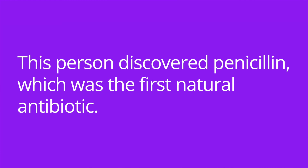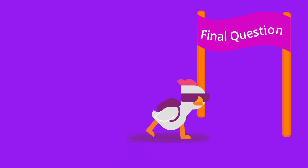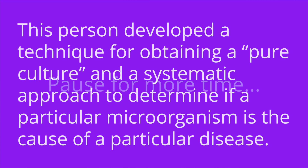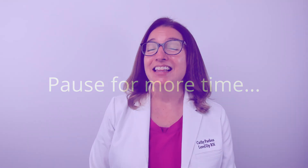Number four: this person discovered penicillin, which was the first natural antibiotic. The answer is Alexander Fleming. And number five: this person developed a technique for obtaining a pure culture and a systematic approach to determine if a particular microorganism is the cause of a particular disease. The answer is Robert Koch. I hope you did great with that quiz, and I hope you found this video to be helpful. Take care and good luck with studying.